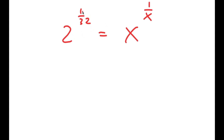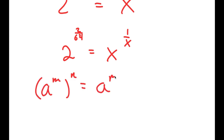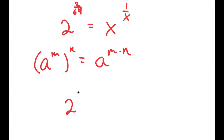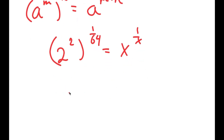What we can do is rewrite 1 over 32 as 2 over 64. Remember, this is the same thing as if I have a to the power of n to the power of m, equal to a to the power of m times n. So I can reverse this and rewrite 2 to the power of 2 over 64 as 2 to the power of 2 to the power of 1 over 64. And 2 to the power of 2 is 4, so I get 4 to the power of 1 over 64 is equal to x to the power of 1 over x.